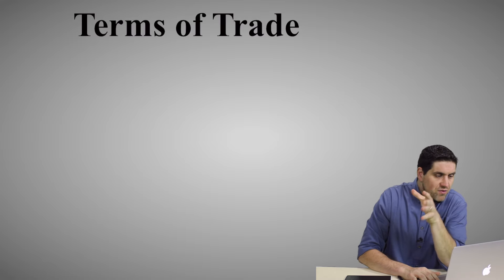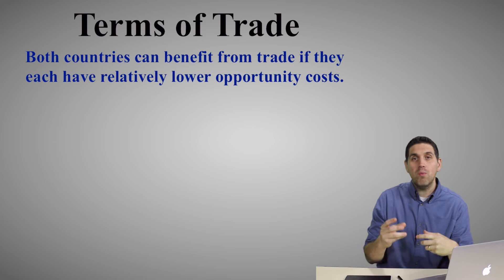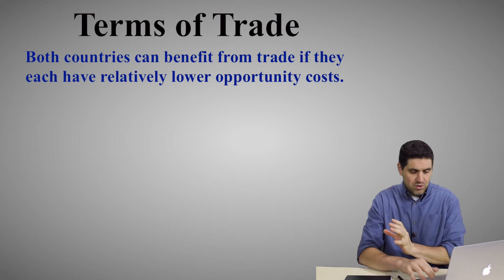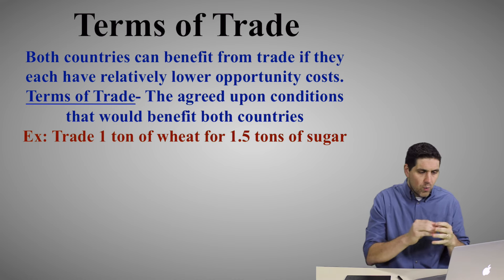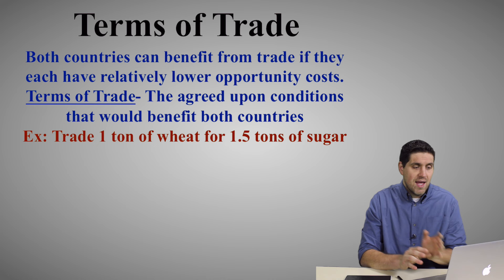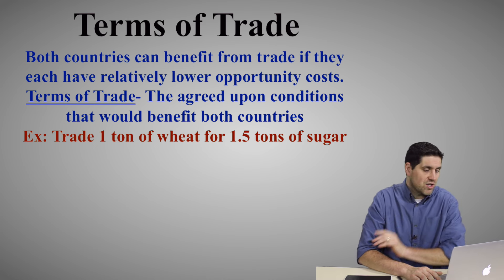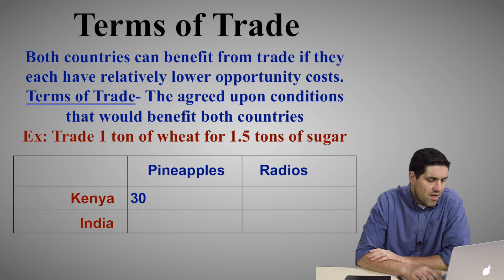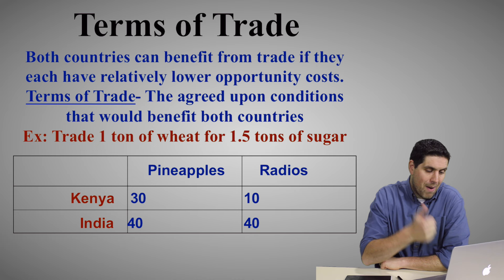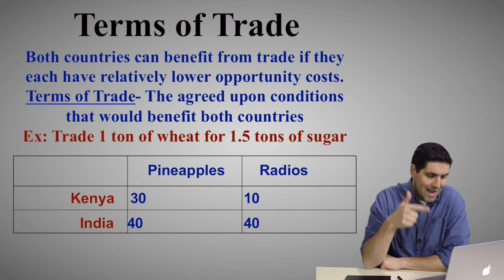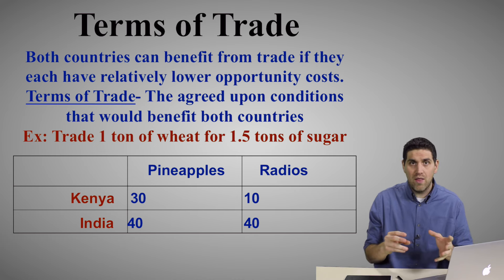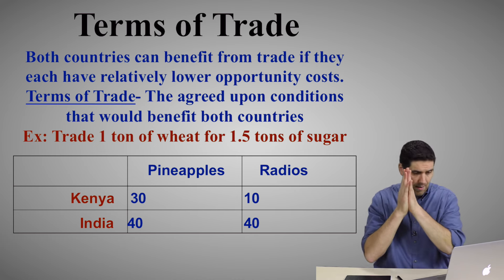Now we're going to take it to the next level and learn the idea of terms of trade. Terms of trade means that both countries can benefit, but they don't benefit at every single set of terms. For example, there has to be a certain number of cars traded for a certain number of planes to benefit both countries. Here's an example: Kenya produces 30 pineapples or 10 radios; India produces 40 pineapples or 40 radios. Pause this video and try to figure out who has an absolute advantage in pineapples and radios, who has a comparative advantage, and try to calculate the per-unit opportunity cost.